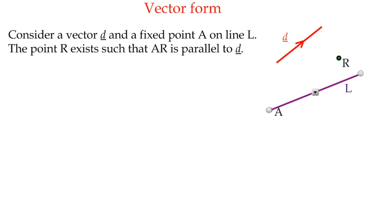Vector form is the basis of our theory here. So what we're going to think about is a line L, that's this purple line here, that we don't know much about. We know that point A lies on the line. So that's a fixed point. We must be given some information about a point that lies on the line.